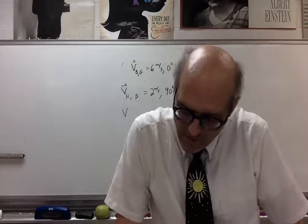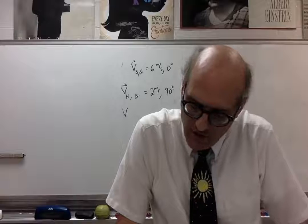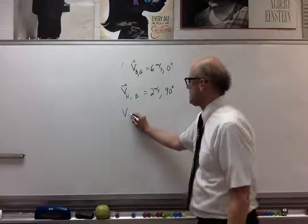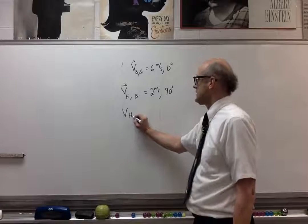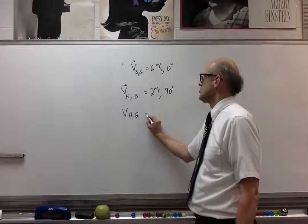What are the magnitude and direction of the hawk's velocity relative to the ground? So the unknown is V_HG.